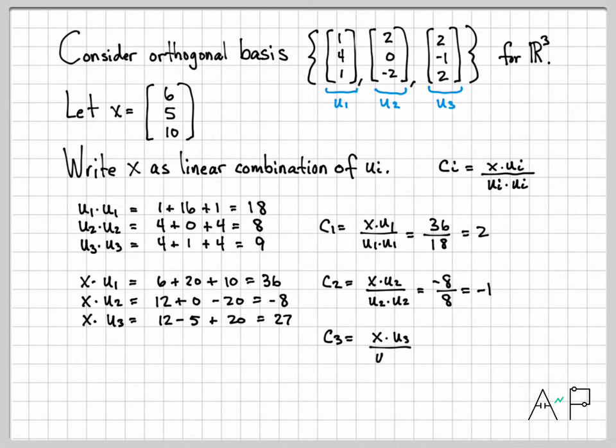And then c₃ is going to be x dotted with u₃. That's 27 divided by u₃ dot u₃. That's 9, which is 3. So these are the coefficients that I can weight each of my basis vectors by. So I can write x as 2u₁ minus 1u₂ plus 3u₃. So that is how I can represent x in this orthogonal basis.